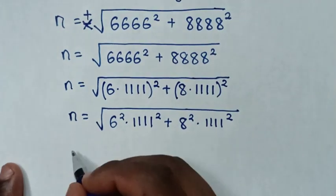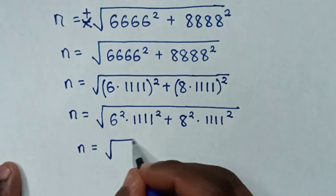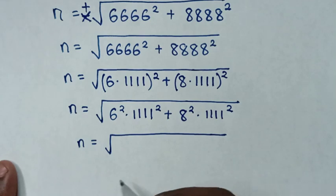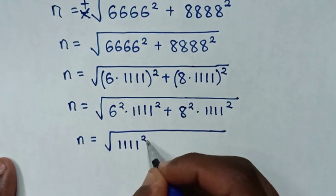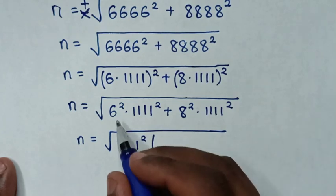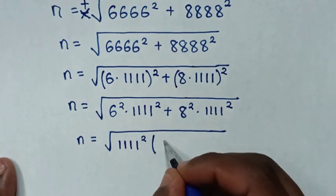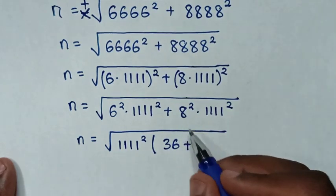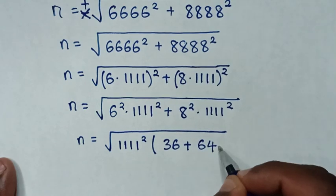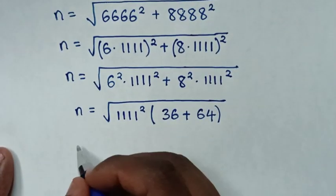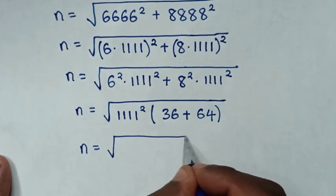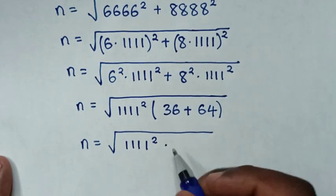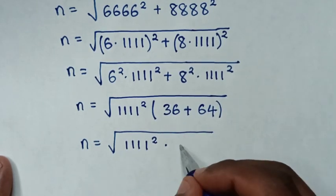In the next step, 1,111 squared is common, so we take 1,111 squared out of the bracket. Then this gives the square root of 1,111 squared times (6 squared plus 8 squared), which is the square root of 1,111 squared times (36 plus 64), and 36 plus 64 equals 100.